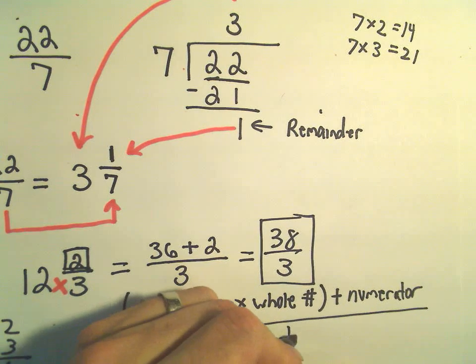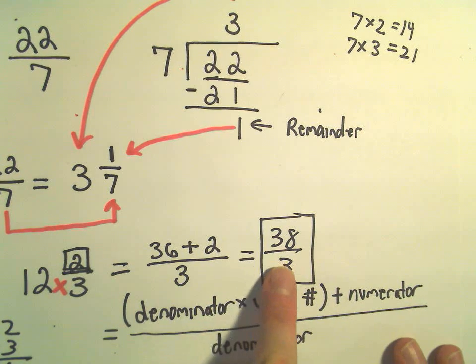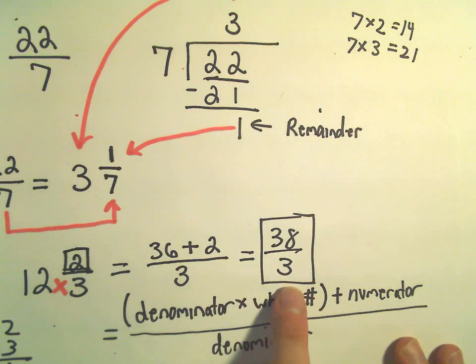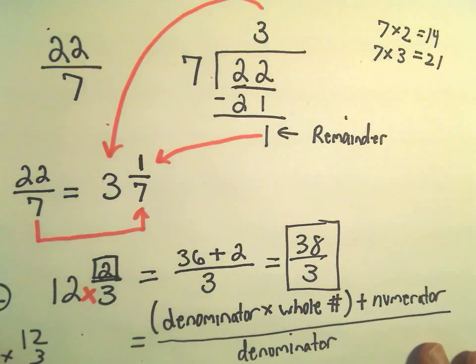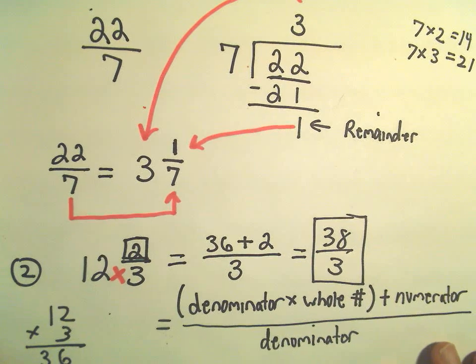And then we just keep that over the original denominator. That's kind of a little formula if you want to think about it that way. And again, you can always check, you know, maybe try to take thirty-eight over three, write it back as a mixed number using long division the way we did, and make sure that you do, in fact, get twelve and two thirds as your answer.